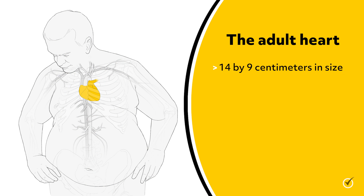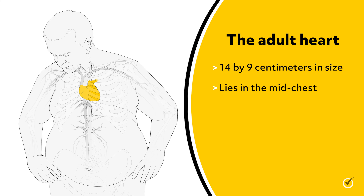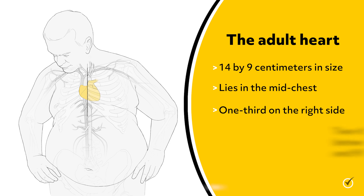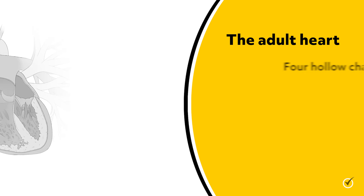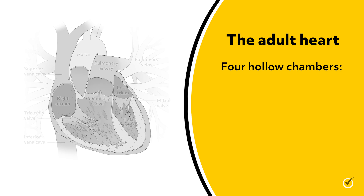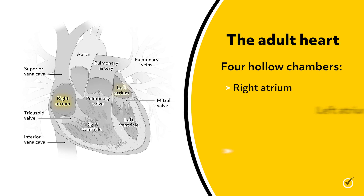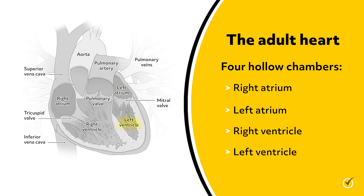The adult heart is about 14 by 9 centimeters in size and lies in the mid-chest, with about one-third on the right side and two-thirds on the left side, between the second rib and fifth intercostal space. The heart has four hollow chambers: the right atrium, left atrium, right ventricle, and left ventricle.